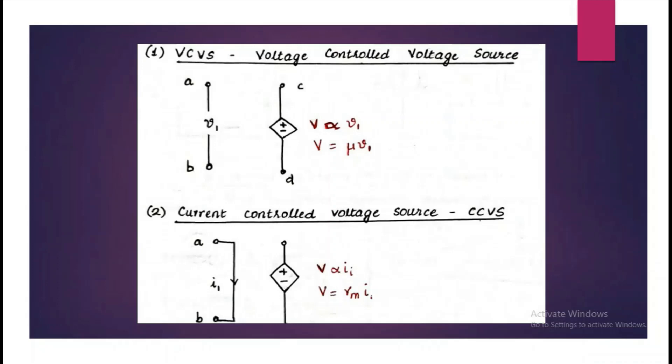In voltage controlled voltage source, the voltage between the points A and B controls or affects the voltage source between the points C and D. The voltage V is directly proportional to V1 and we can equate it with a constant mu. This is a voltage source whose output depends upon this voltage source. Hence, the name voltage controlled voltage source.